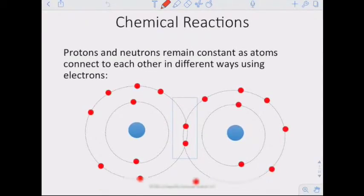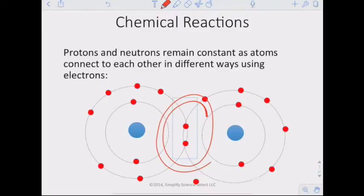Chemical reactions: protons and neutrons remain constant as the atoms connect to each other in different ways using the electrons. A chemical reaction, and this is the big thing you need to get from this, protons and neutrons stay the same. The only thing that's reacting when we're looking at a chemical reaction are the electrons. The electrons are being shared or transferred. That's a chemical reaction.